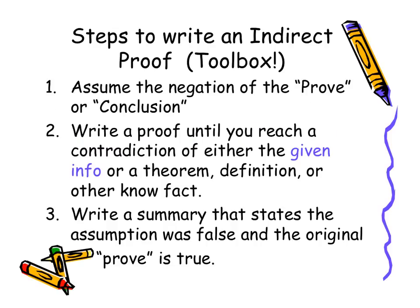So there's a few basic steps that we need to have in our indirect proof. The first one: we want to assume the negation of the proof or the conclusion statement. Next, we want to write a proof until we reach a contradiction by either the given, or a theorem, or definition, or some other known fact — something that we know is true. So if the given states something and we write something down that contradicts that given, we know that we are finished.